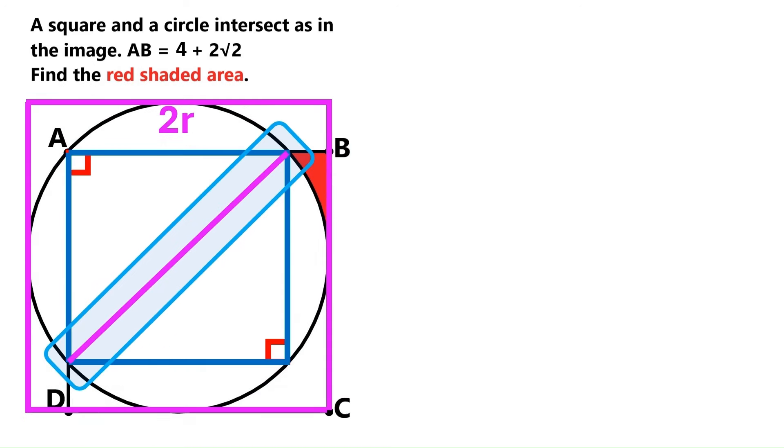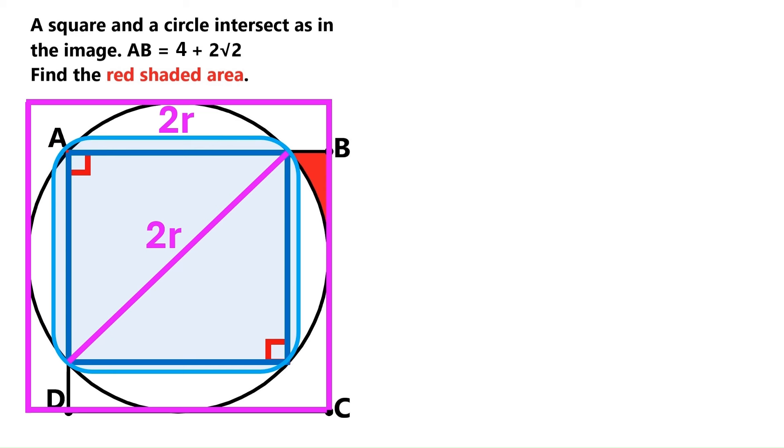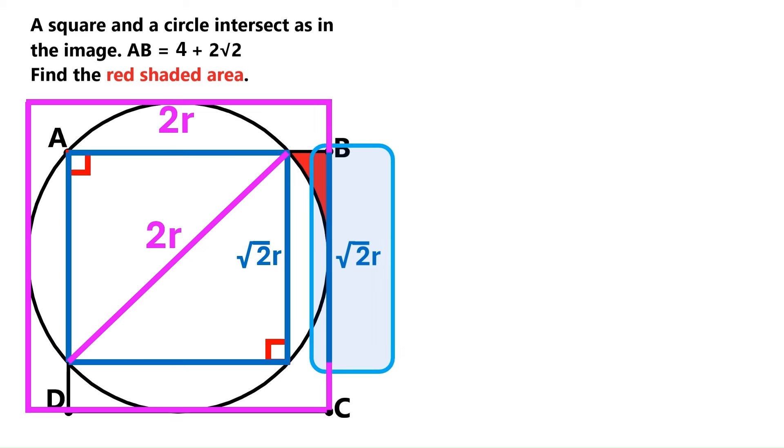Let's put the diameter back in here. Its length is 2R, and it's the diagonal of this square. And we can always divide the diagonal by root 2 to find the side of a square. 2 divided by root 2 is root 2. We can project that root 2 onto here. We've got two equal line segments up here, and down here.